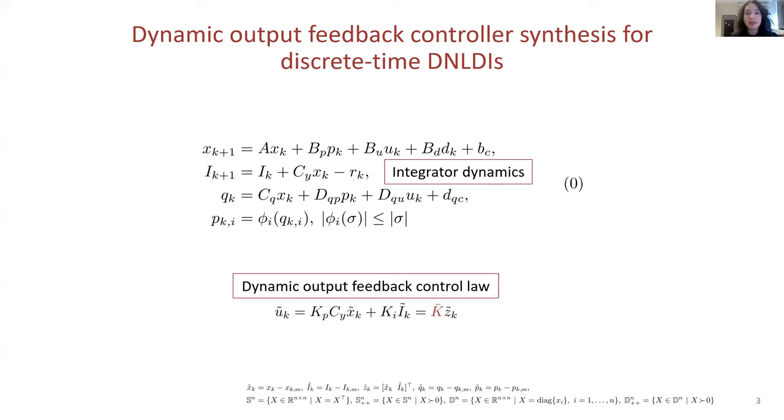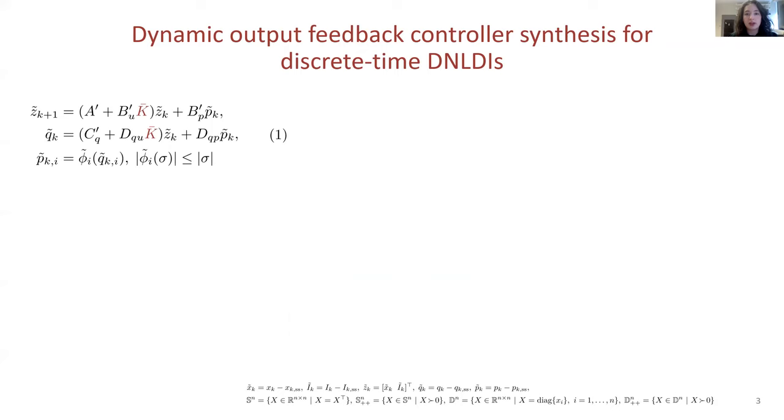Equation 0 describes a DNLDI with the addition of the integrator dynamics, which ensure that the system can have zero steady state offset. Given the output feedback control law shown here, and after exploiting sector-boundedness and slope-restriction properties of common DNN activation functions, equation 0 is rewritten as 1 in the deviation variable form.